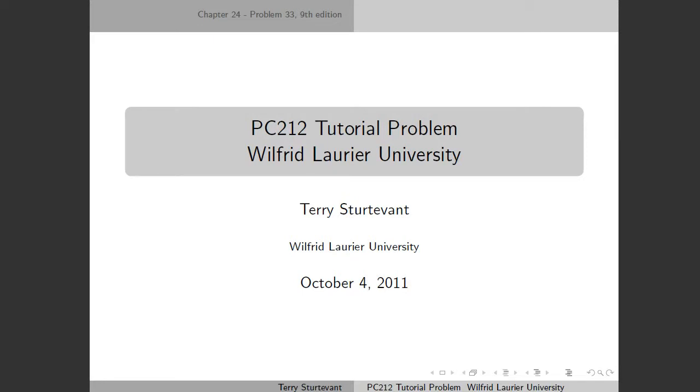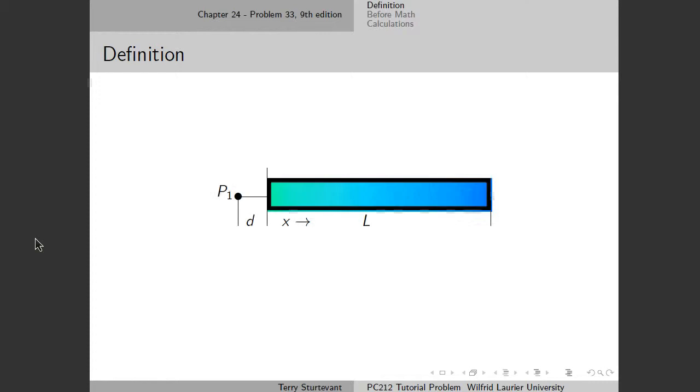This is the solution to problem 33 from chapter 24 in the 9th edition. What you have is a rod with a non-uniform linear charge density, and you know that the potential is zero at infinity, and you're trying to find the potential at this point P1.